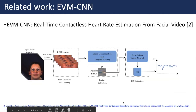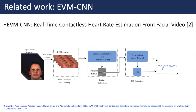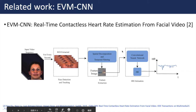We will introduce two related works. The first one is proposed in a paper included in the 2019 IEEE Transactions on Multimedia, titled EVMCNN: real-time contactless heart rate estimation from facial video. Even though this method is a learning-based method, they use several preprocessing steps in front of the neural network, including ROI detection, spatial decomposition, and temporal filtering. The proposed ROI detection is meant to extract the cheek region.